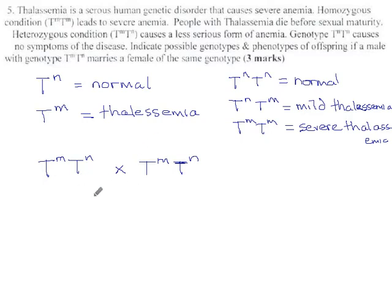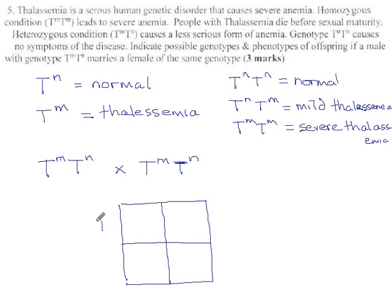Well, it's a single trait. Each of these parents can produce two different gametes. They can pass on either the T^M or the T^N. So, here's the dad's side. And the mom's side is exactly the same, because they're genetically identical. So, what offspring can we get?